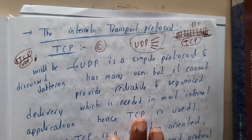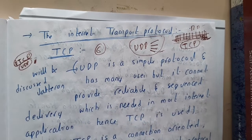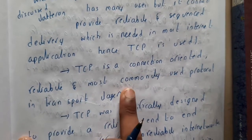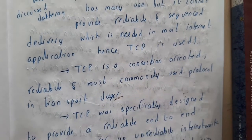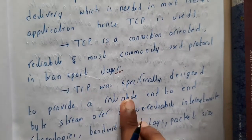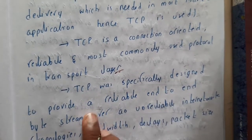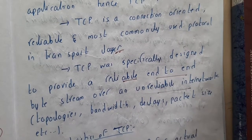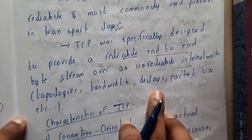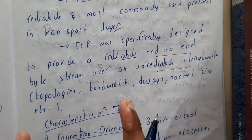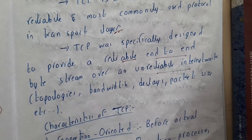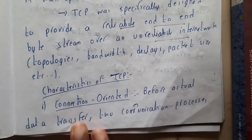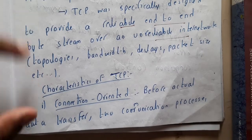This drawback brought TCP into play. TCP is a connection-oriented, reliable, and most commonly used protocol in the transport layer. TCP was specifically designed to provide reliability and end-to-end byte stream over unreliable internets with varying topologies, bandwidths, and delays. If flow control is proper, there will be no such issues.